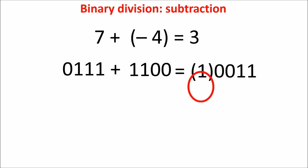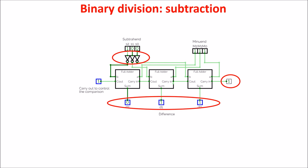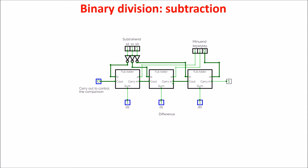We can use this carryout bit to compare the dividend with the divisor, and to decide whether to perform the subtraction or the shifting. We use circuit-verse simulator to show how we build a subtractor using an adder. In this example, we have a 3-bit minuend of 7 and a 3-bit subtrahend of 4. To do this subtraction, we bitwise invert the subtrahend and add 1 directly to the carry-in of the least significant bit. The difference is correctly 3, and being positive, we get a carryout of 1. If we do 6 minus 7, where the subtrahend is bigger, and the difference is negative, we get 0 as carryout.